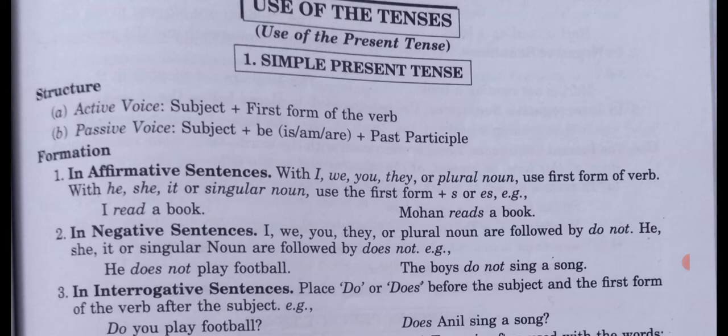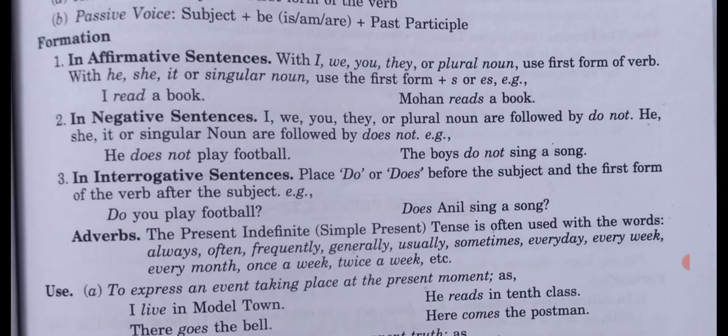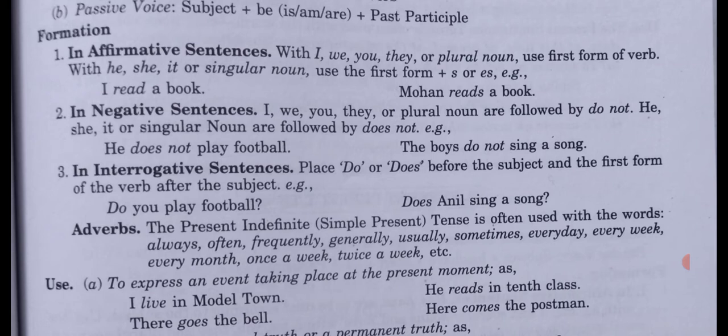For present tense in active voice, the rule is subject plus first form of the verb. In passive voice, subject plus is/am/are plus past participle (third form of the verb). The first form of the verb changes according to the singularity or plurality of the subject. Now let's look at the formation and examples of present indefinite tense.